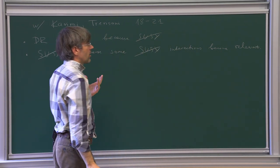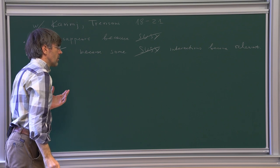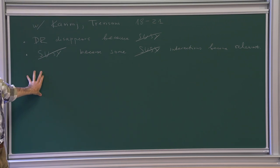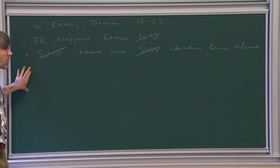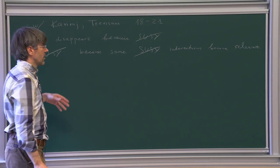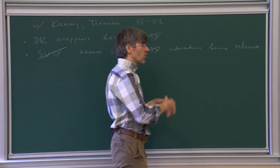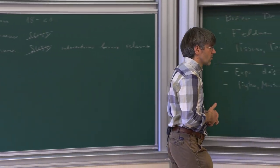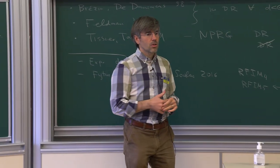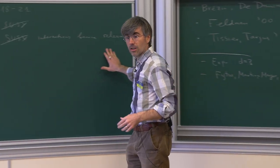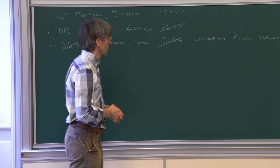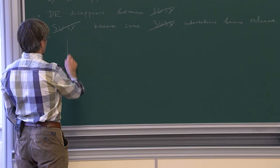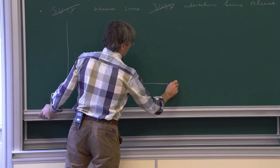We show that these SUSY-breaking interactions do become relevant, so supersymmetry becomes broken. In order to appreciate this fact, one has to realize that supersymmetry in this model is an emergent symmetry — it's not present at the microscopic level. The microscopic Lagrangian is not supersymmetric; it has all sorts of interactions, some of which do break SUSY. So it is quite conceivable that something like this can happen, but of course one has to make a calculation to see whether it does.